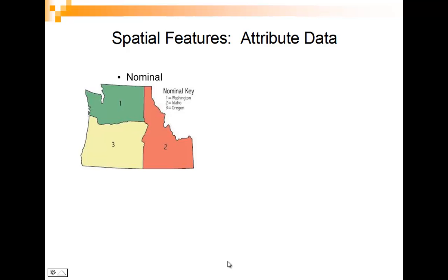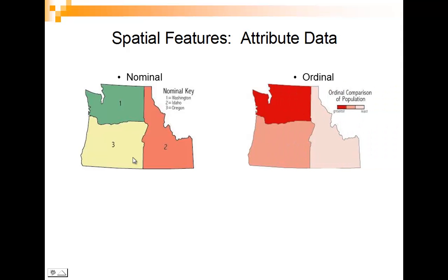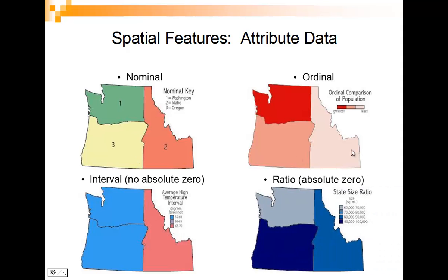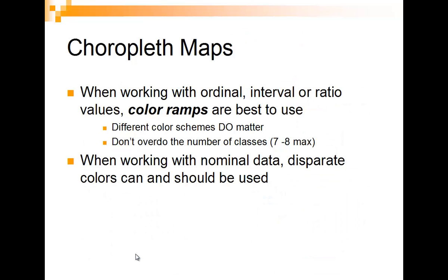When we talk about attribute data — in nominal data, you can see these are in three different colors because we're just showing different states. We have ordinal data such as population, and the color symbols are related to each other. We have interval data like average high-low temperature, bringing in dichromatic color systems going from red to blue, which I find pretty neat. We have choropleth maps where we color in states or counties based on a particular value.